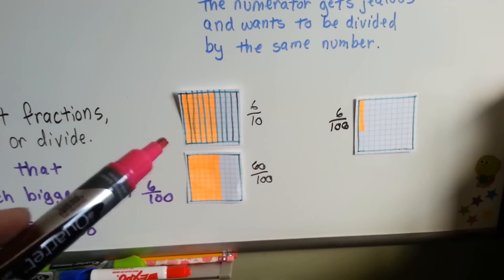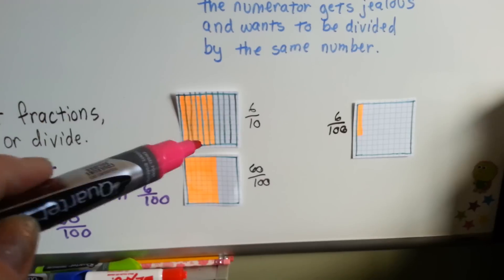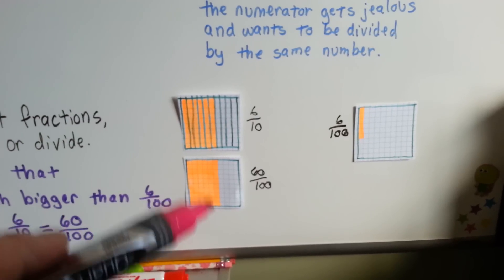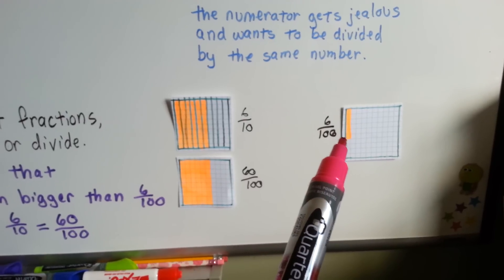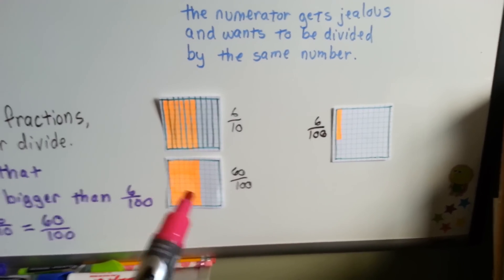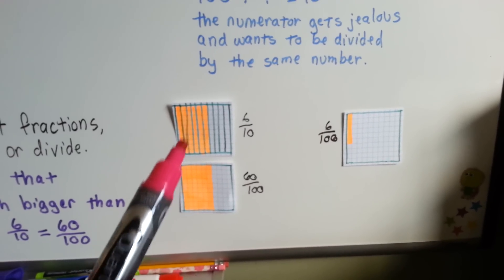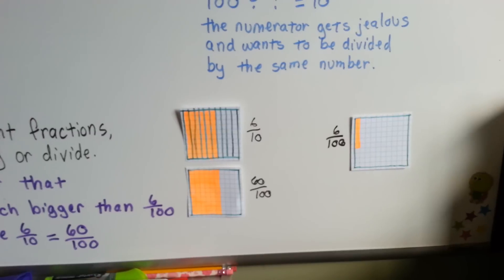So here, look. Here's six tenths. Here's sixty one hundredths. And there's six one hundredths. See how little and tiny six of the one hundredths are? Where sixty of them, where six tenths is much bigger.